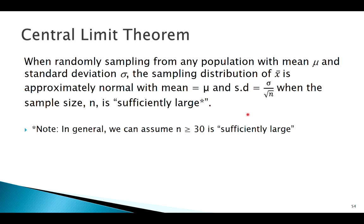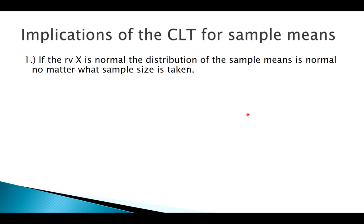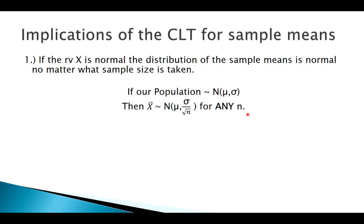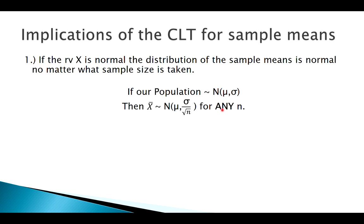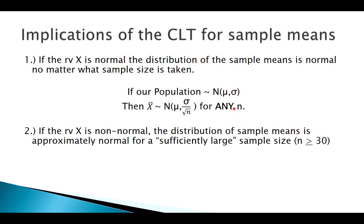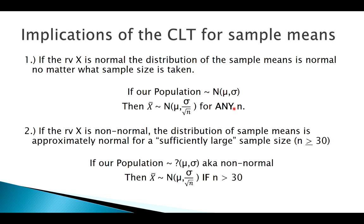That's a theoretical idea, but then how do we apply it? Another big distinction was what the population we're sampling from looks like. If the population we're sampling from is normal, we were in good shape for any sample size — we could assume normality. But if the population was not normal, that's where we had to get our big enough sample size.